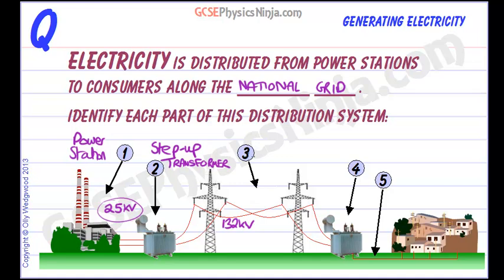The third part of the national grid is the transmission lines, or the transmission cables. You'll be familiar with the pylons that you see across the country.